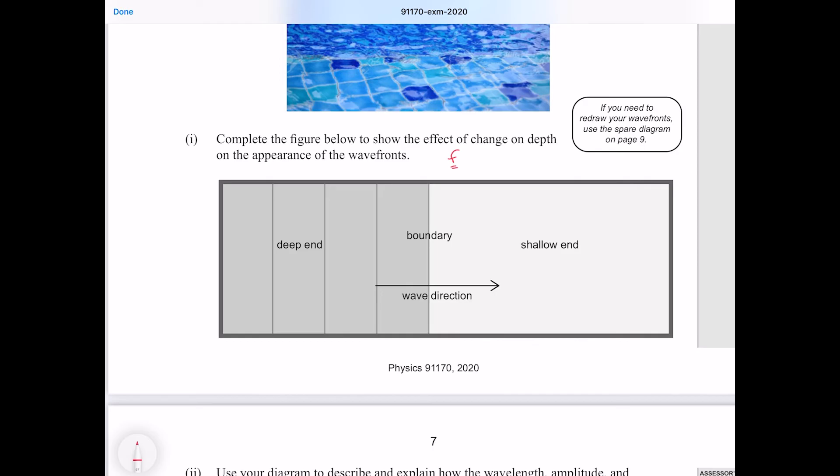Now as we move to the deep end to the shallow end, our velocity is going to decrease. Now given that we know that velocity is equal to frequency times wavelength, we just use that relationship above. If our frequency stays the same and our velocity goes down, then our wavelength must also go down. That means that in the shallow end our waves are going to be closer together.